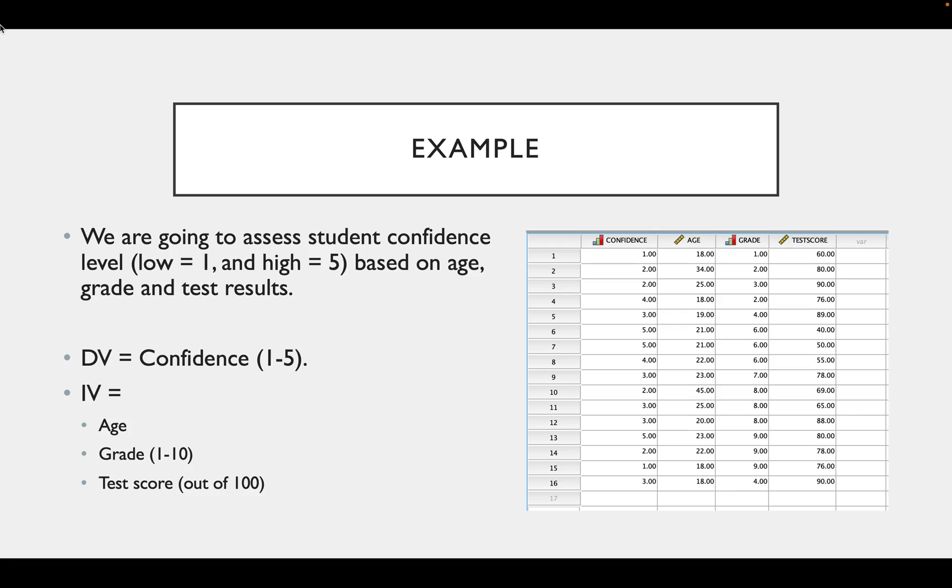And we have our independent variables. We have age and test score, which are measured on a continuous scale, because they can be any number. And we also have grade, which is measured on an ordinal scale of between one and ten, a bit like our GCSE scores.